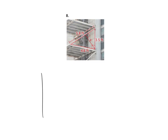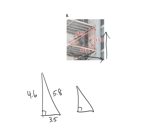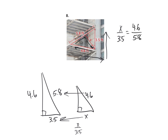Number 8, same type of thing. The large triangle — it's a three-dimensional view, so it's kind of weird. We have 4.6, then 3.5, and the hypotenuse is 5.8. The mid-sized triangle: we don't know that one, and that is X, and then the hypotenuse is 4.6. That's enough information. X is to 3.5 as 4.6 is to 5.8. So 5.8X equals 3.5 times 4.6, which is 16.1. Take 16.1 divided by 5.8, and we get 2.8.